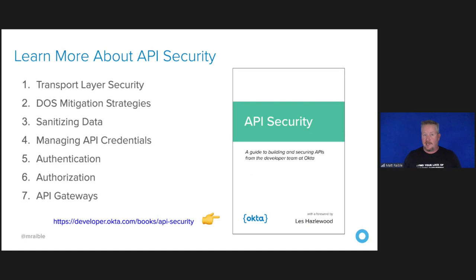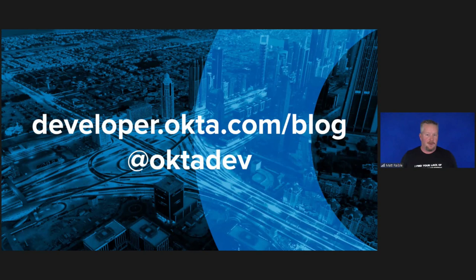My team also wrote a book on API security — a guide to building and securing APIs from the developer team at Okta, about 120–150 pages. I'd invite you to check out the Okta developer blog — we have a lot of security topics, Spring Boot tutorials, Progressive Web Applications, Angular, React, Vue, Microservices, and JHipster, one of my favorite projects that allows you to generate a microservices architecture. We also have a YouTube channel at youtube.com/OktaDev where we post a couple of videos a week. A huge thanks to Chris Richardson and Rob Winch for their thorough reviews and detailed feedback on the blog post that backs up this talk.